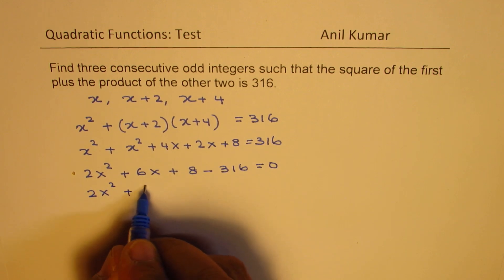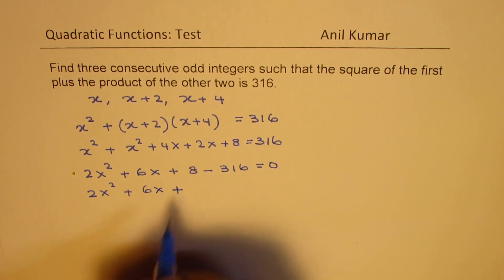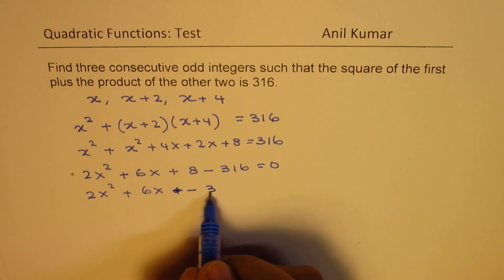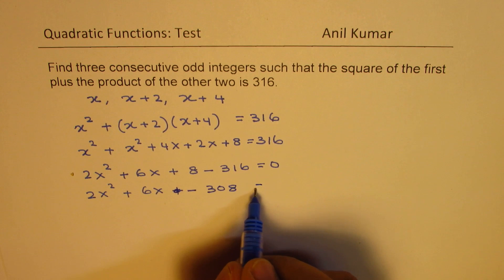Plus 8 minus 316 equals to 0. 2x squared plus 6x—now when you take away 8 from here, you are left with minus 308 equals to 0.